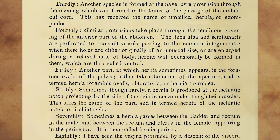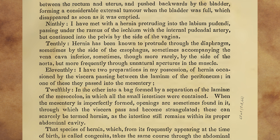Seventhly, sometimes a hernia passes between the bladder and rectum in the male, and between the rectum and uterus in the female, appearing in the perineum. It is then called hernia perineae. Eighthly, I have seen the vagina protruded by a descent of the viscera between the rectum and uterus, and pushed backwards by the bladder, forming a considerable external tumour when the bladder was full, which disappeared as soon as it was emptied. Ninthly, I have met with a hernia protruding into the labium pudendi, passing under the ramus of the ischium with the internal pudendal artery, but continued into the pelvis by the side of the vagina. Tenthly, hernia has been known to protrude through the diaphragm, sometimes by the side of the oesophagus, sometimes accompanying the vena cava inferior, sometimes, though more rarely, by the side of the aorta, but more frequently through unnatural apertures in the muscle.